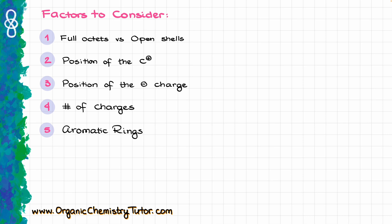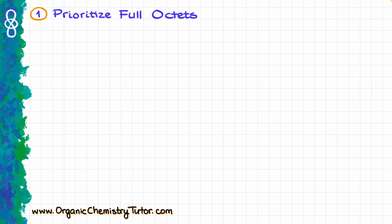Let's look at those factors one by one and see how we can apply those to different resonance structures. The first one is the full octets. On the left I have a carbocation, then a pi bond, and also a hetero atom — the oxygen — which has a couple of electron pairs, which means we might want to use that in resonance if applicable.